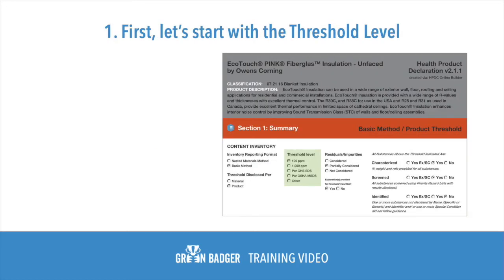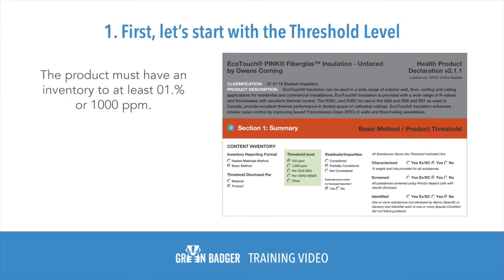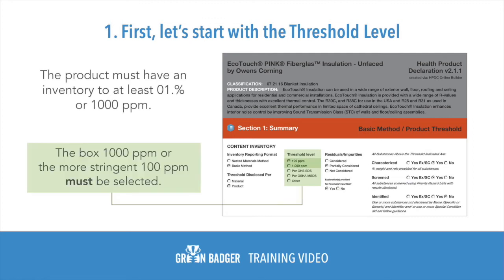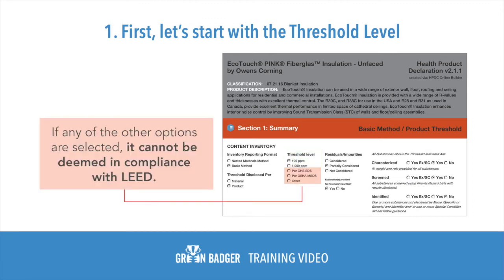Let's start with the threshold level. Based on the LEED language mentioned earlier, the product must have an inventory to at least 0.1%, or 1,000 parts per million. So the box for 1,000 ppm, or the even more stringent 100 ppm, must be selected. If any of the other options are selected, it cannot be deemed to be in compliance with LEED.